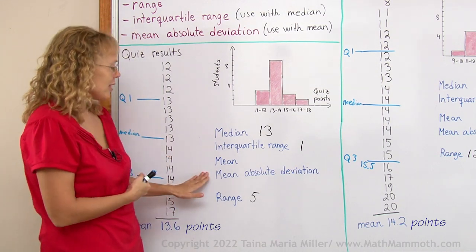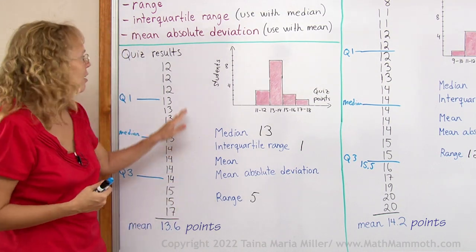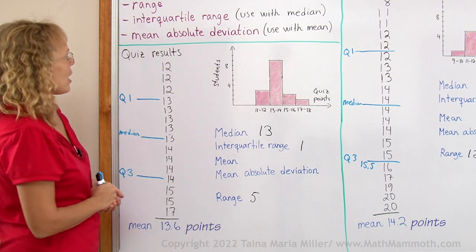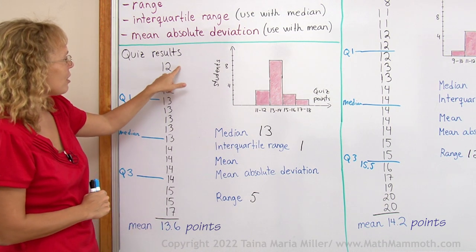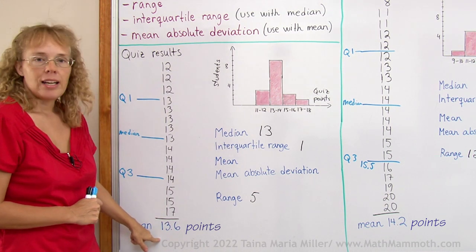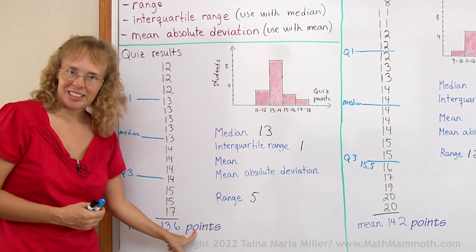Basically what it means is how far are these data values on average from the mean. We calculate it by calculating first the difference of each value to the mean and then we take the average of the differences.